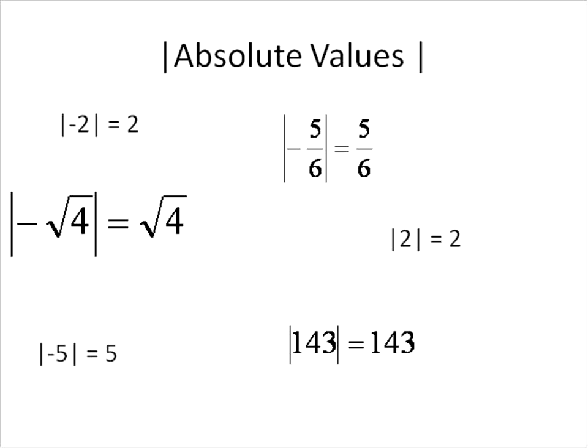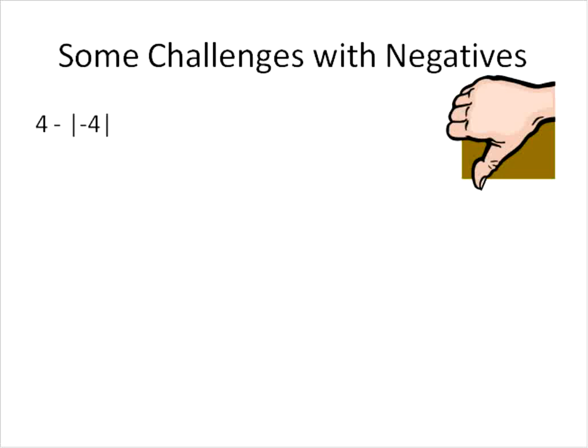Now, there are a couple of challenges with absolute values. I'll definitely give you that. And most of the challenges come when we throw in so many negative signs that it makes it confusing. So let's start off with just two negative signs and kind of work our way up. Let's say we have 4 minus the absolute value of negative 4. The first thing that we would solve, and we treat absolute value signs just like they're parentheses. The first thing you do is you solve what's inside them.